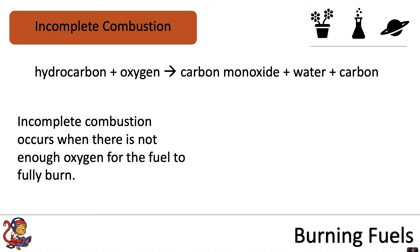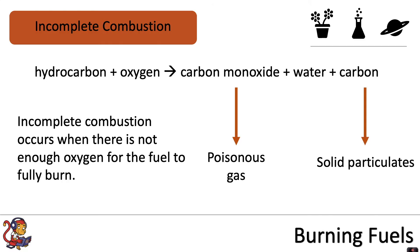The problems with incomplete combustion are that the carbon monoxide produced is a poisonous gas — it is toxic and it can kill people. The solid carbon is released in small particles that we call solid particulates. This causes global dimming, and where this builds up in the atmosphere, it can prevent sunlight from coming through to the Earth's surface.